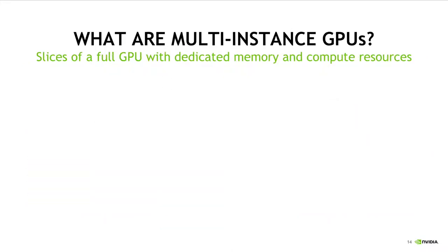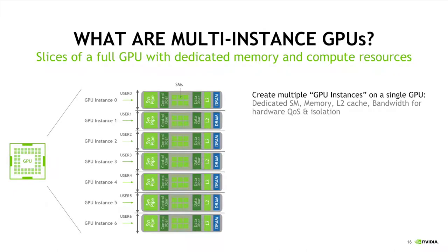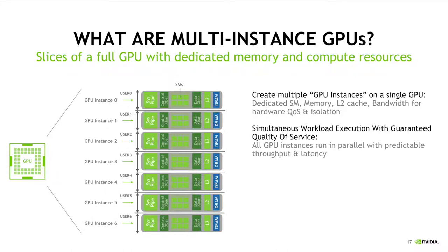Well, this is where multi-instance GPUs come in. It's hardware support for taking a full GPU and dividing it into several smaller GPU instances, each of which have their own dedicated set of memory and compute resources. Additionally, each GPU instance gets a dedicated percentage of the overall memory bandwidth, and any faults that occur are isolated to a single instance without disrupting the others. All GPU instances run in parallel with predictable throughput and latency, providing improved quality of service over previous GPU sharing solutions such as MPS or CUDA strengths.